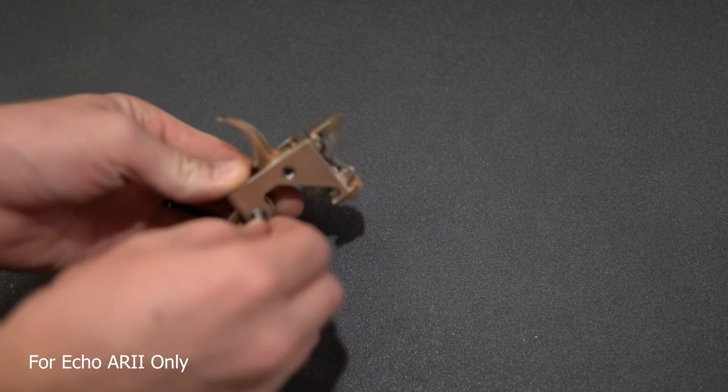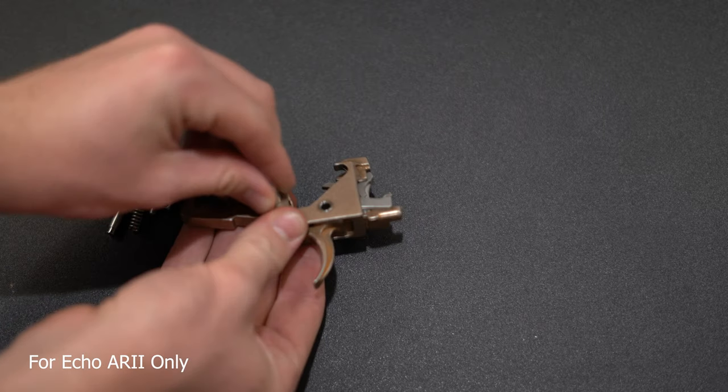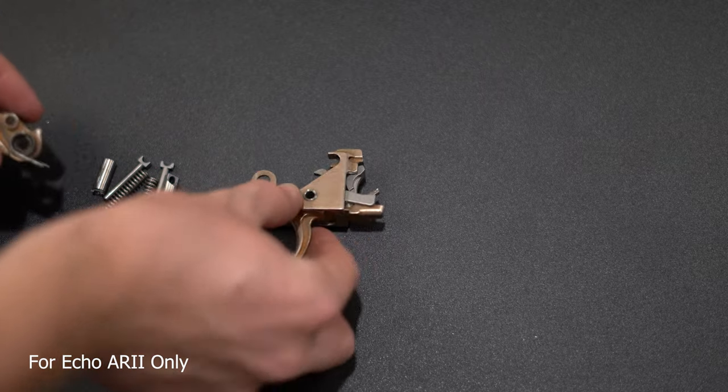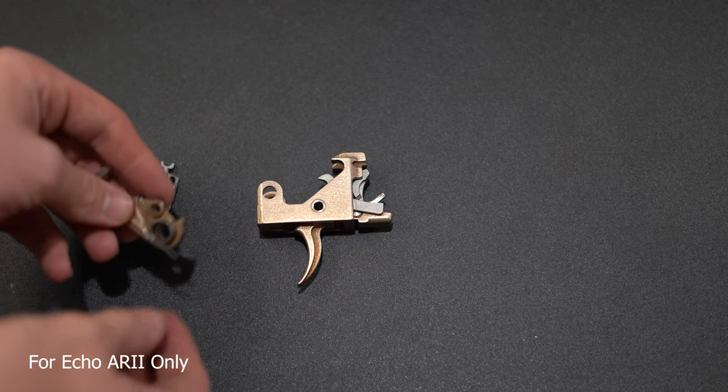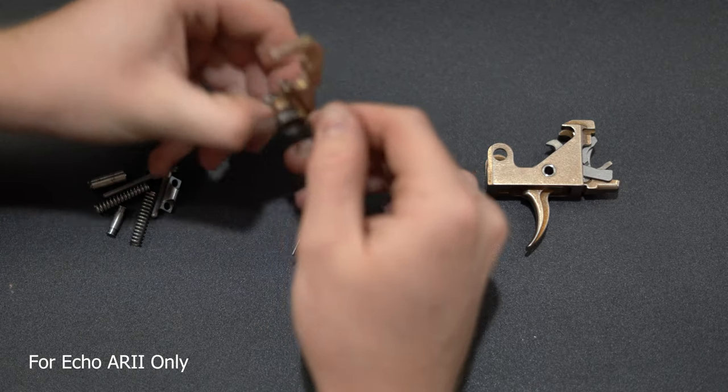Using the toggle retainer, push out the hammer pin. The hammer will easily slide out. Pull out the hammer spring as shown in the video.